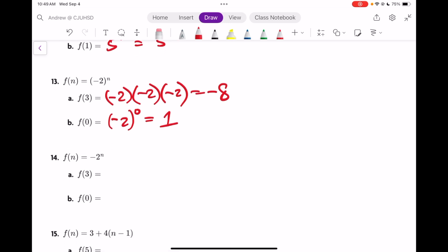Now in this one the parentheses are gone, so it's just negative 2 to the 3rd, and that means only one negative. It's negative 2 times 2 times 2 because the negative is not being repeated three times here. It's negative 8, and f(0) is negative 2 to the 0. The 2 is taken to the 0 power, that's a 1, but the negative still remains and that's negative 1.